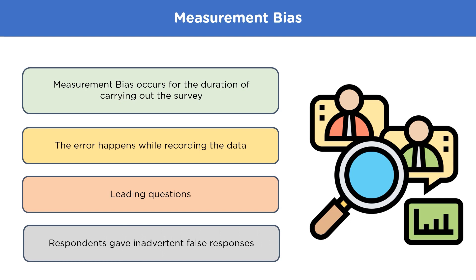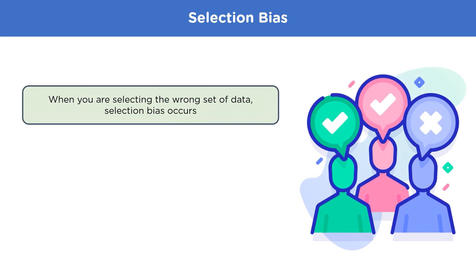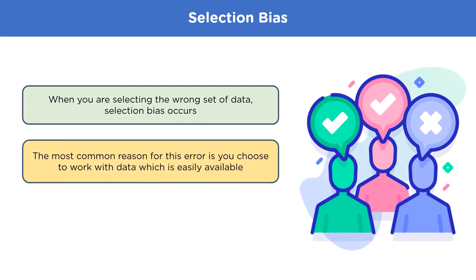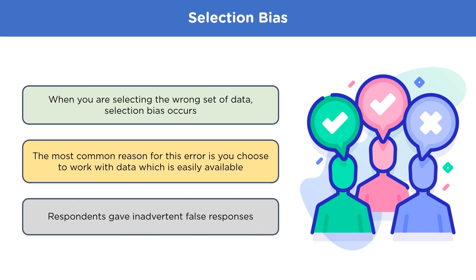The next type is selection bias. Selection bias occurs when you choose your sample or data incorrectly. A common reason is when people work with data that is easily available. For example, if you're conducting a poll about how people feel about the current ruling government and many respondents say Twitter is their primary source of information, that data can be classified as a traditional selection bias — easily accessible but unrepresentative of the overall population.